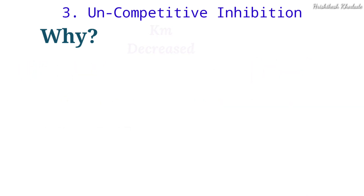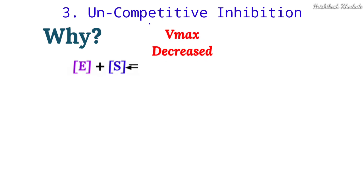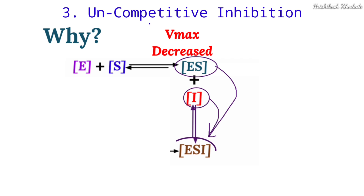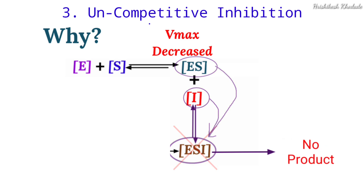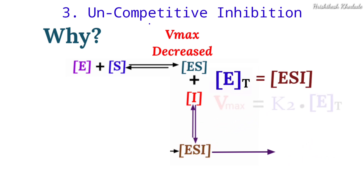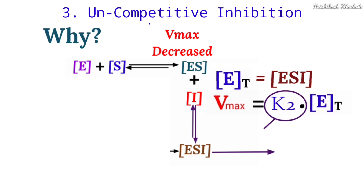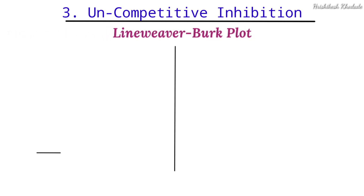The Vmax is also decreased in uncompetitive inhibition because the enzyme-substrate complex, in association with the inhibitor, becomes trapped inside the enzyme-substrate-inhibitor ternary complex and cannot deliver any product. Since Vmax equals k2 times Et (kcat, the turnover number), and the enzymes are trapped, the velocity and Vmax are reduced. We can represent this using the Lineweaver-Burk plot.